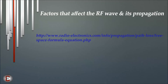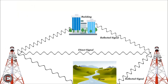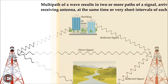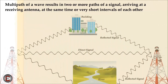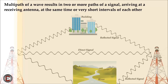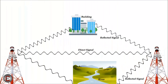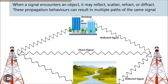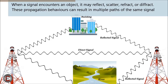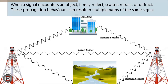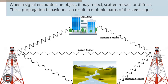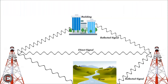If you want to know more about this loss, please visit the link below. Another important concept before we wrap up is called multipath. Multipath is a propagation phenomenon of a wave. It results in two or more paths of a signal arriving at the receiving antenna at the same time or at very short intervals. When a signal encounters an object, it may reflect, scatter, refract, or diffract. These propagation behaviors can all result in multiple paths of the same signal. I plan to make a detailed video on this phenomenon and further discuss it when taking up the topic of the 802.11n standard.